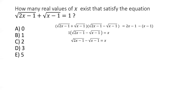We started with what we were given and multiplied by the conjugate to apply the a² − b² formula. Now we can treat these as two equations: the original gives us p + q = 1 (where p = √(2x−1) and q = √(x−1)), and the new equation gives us p − q = x.